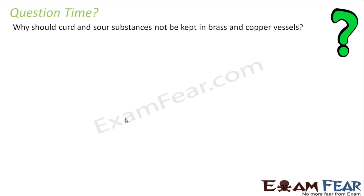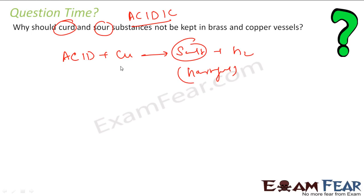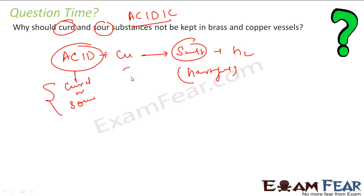Question: Why should curd and sour substances not be kept in copper vessels? The answer is simple: curd and sour substances are acidic in nature. When you put acid in contact with copper, you get salt plus hydrogen gas. The reaction can create harmful salts and hydrogen gas, and no heat is even required. That is why you should not keep curd or sour substances in copper vessels.